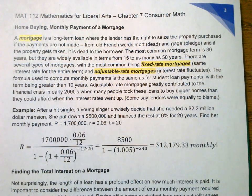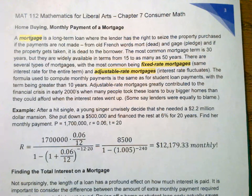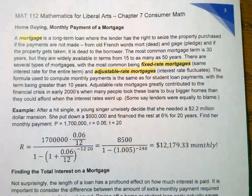Page three of chapter seven, section six: home buying and monthly payments of mortgages. A mortgage is a long-term loan where the lender has the right to seize the property purchased if the payments are not made. The word comes from old French words — 'mort' meaning dead and 'gage' meaning pledge.